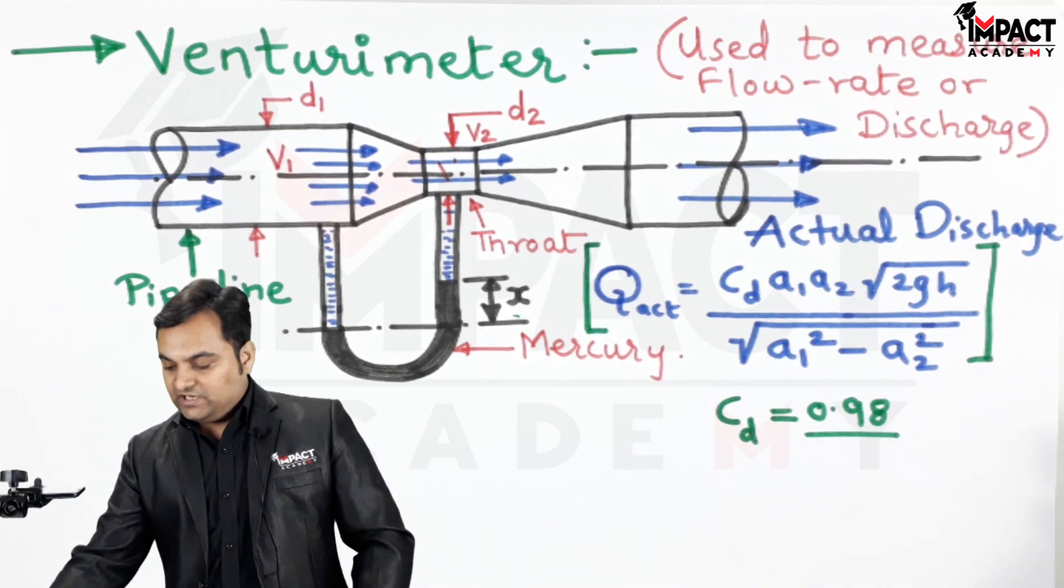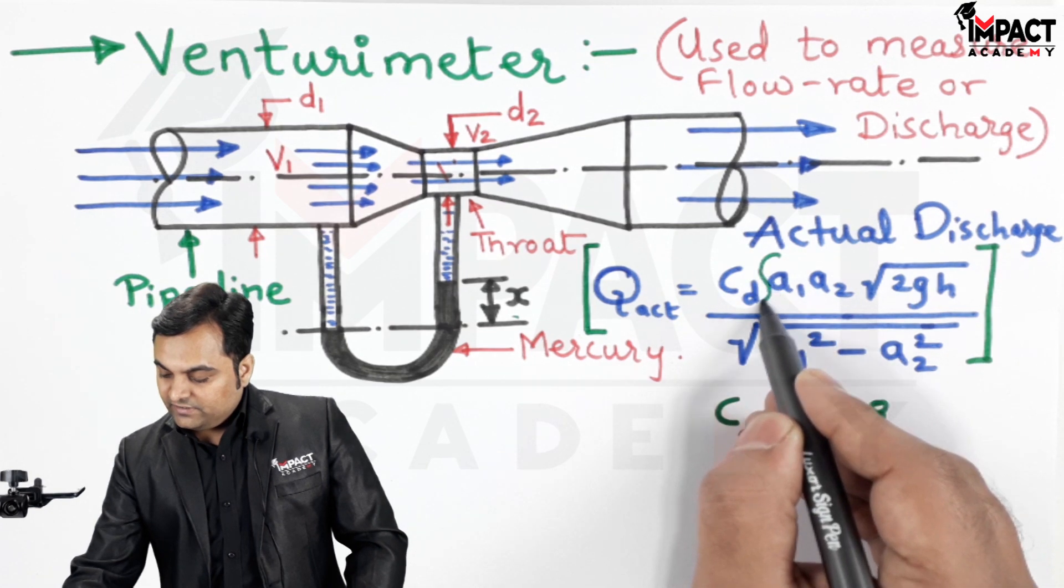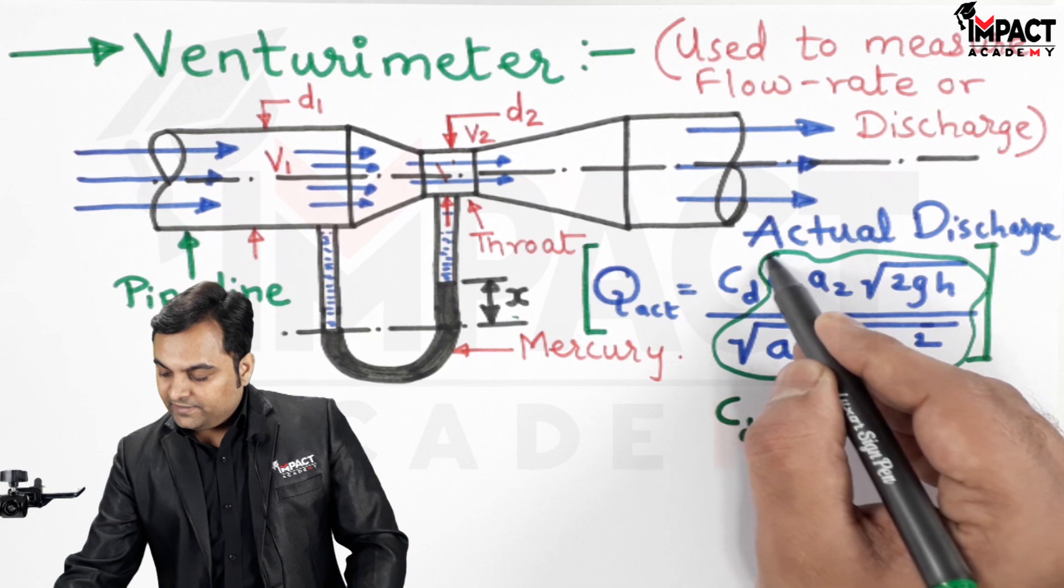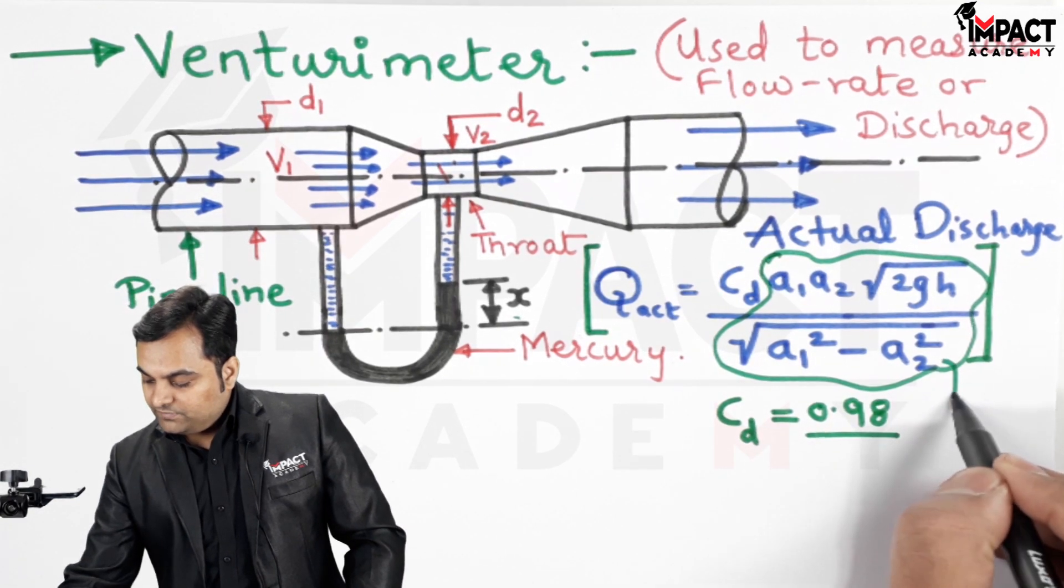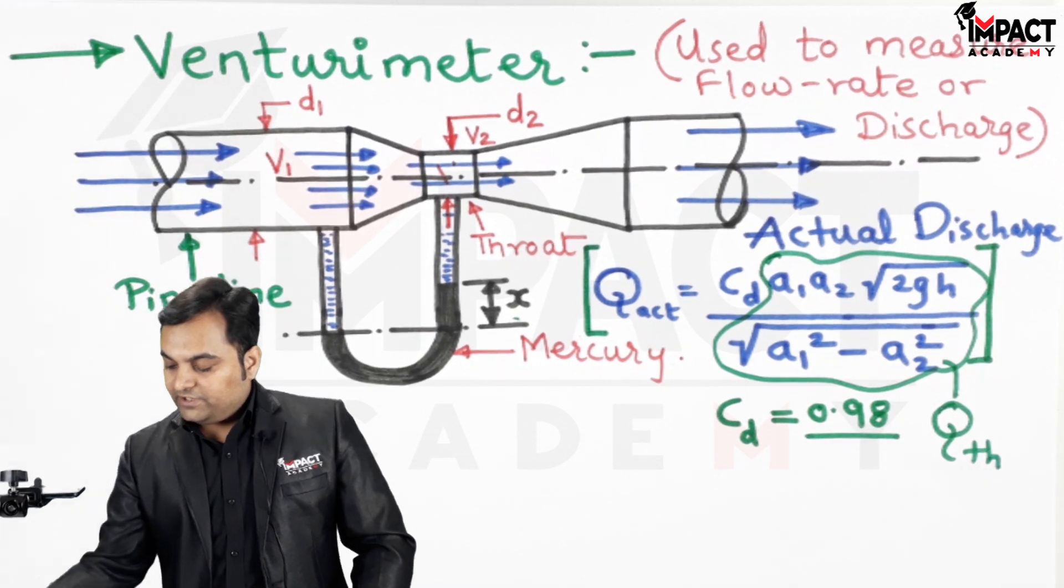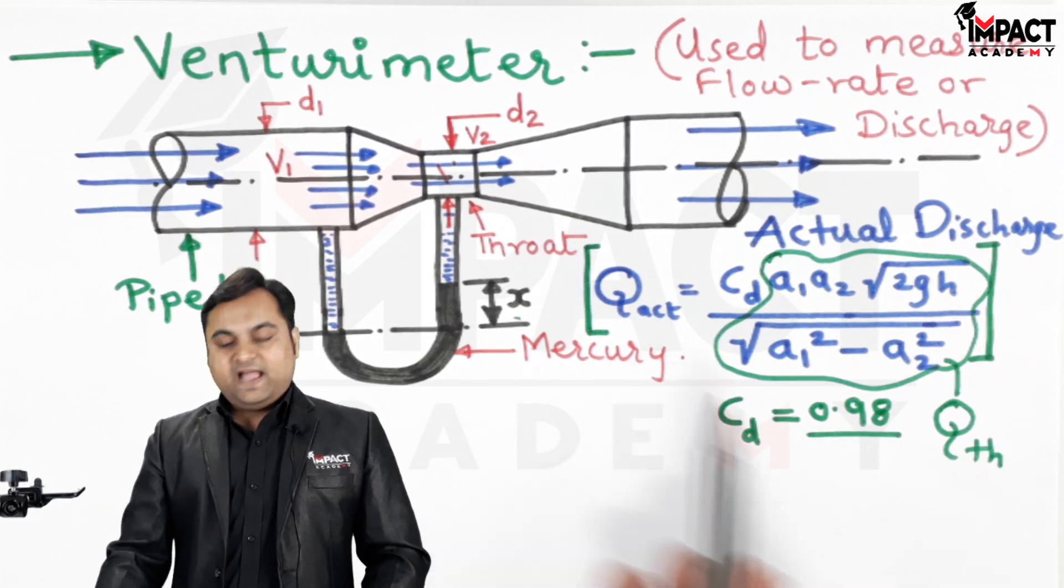This will give us the actual discharge, and whatever is there with Cd, we can see this term I am highlighting. This much term is called as the theoretical discharge, denoted by Q theoretical. If we multiply with Cd that gives us the actual discharge.